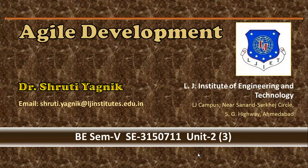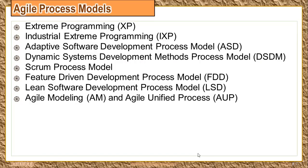Hello all, this is the third lecture of Agile Development. In the previous lecture we were on Agile Process Models. We have already covered Extreme Programming and Industrial Extreme Programming, which was a variant of the previous one. Today we are going to see the Adaptive Software Development Process Model as well as the Dynamic Systems Development Model.